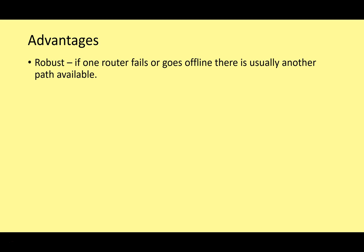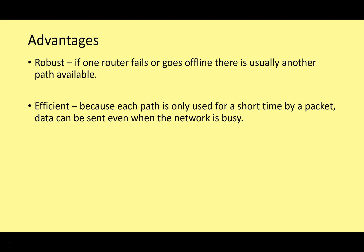Why do we use packet switching? It's robust: if one router fails or goes offline, there's usually another path available. It's efficient because each path is used for only a short time by a packet. Data can be sent even when the network is busy — despite millions of people using millions of devices, packets can come and go without tying up a connection all the time.